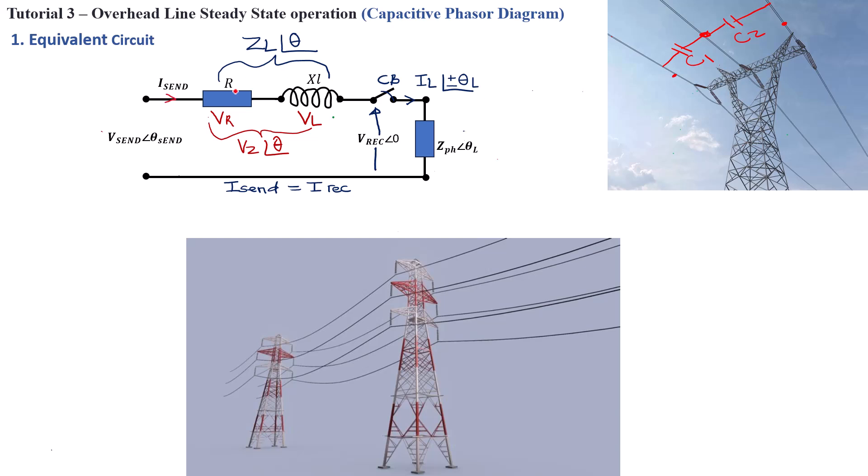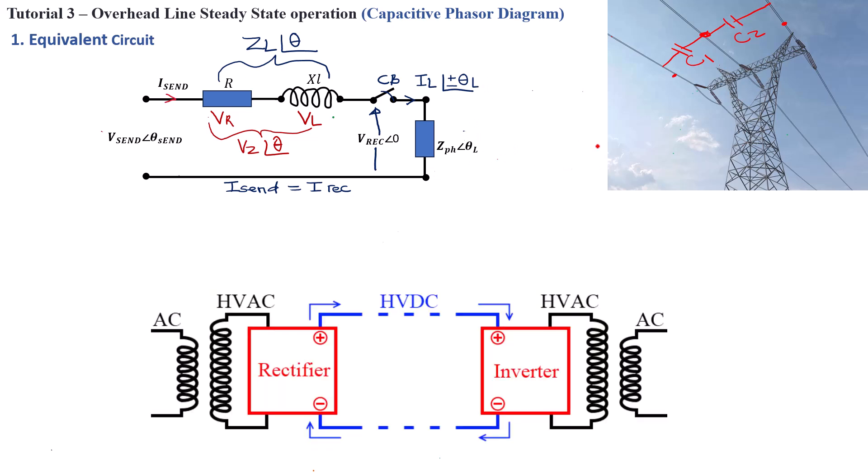First off, this tutorial is based on the transmission of AC power. This is why we are discussing phasor diagrams, phase angle, and so forth. Because in DC power transmission, you will not have phase angle or phase shift.